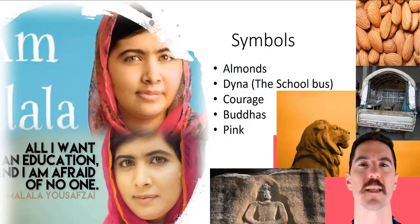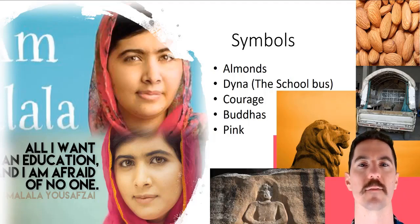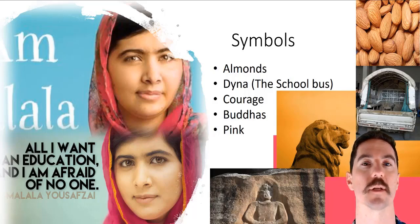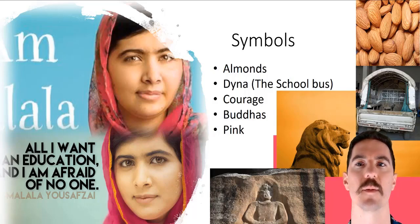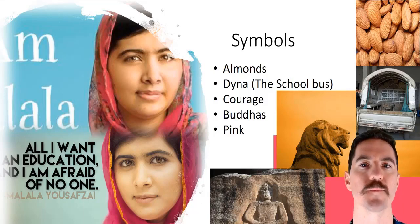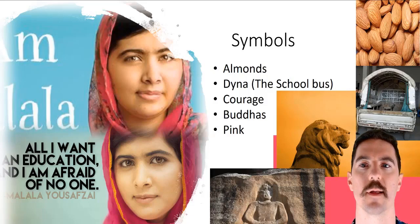For symbols — most of these you can find yourself — they're just things that represent more than what they are. I haven't listed too many here because it's basically a series of memoirs, diaries, and anecdotes, so she hasn't really purposely constructed too many symbols. But the motifs are things that run throughout the story. I've listed almonds, the diner or school bus, courage, buddhas, and the colour pink. Pink and buddhas could even become motifs depending on how you feel about them.